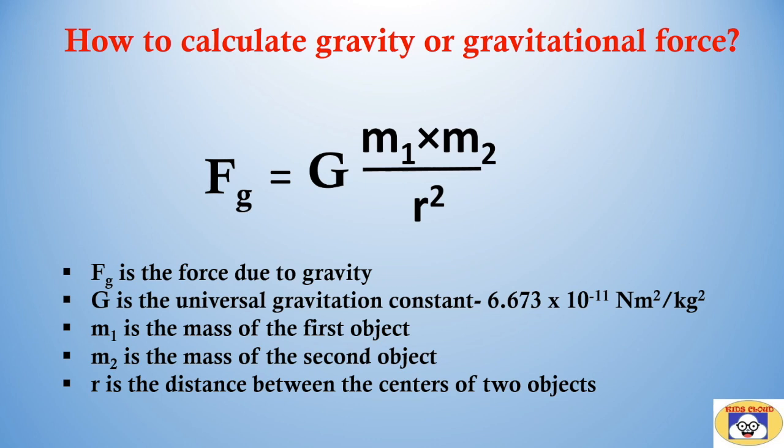This equation indicates that if the mass of either object increases, the gravitational force of attraction between them also increases. On the contrary, the gravitational force gets weakened with the increasing distance between the objects.